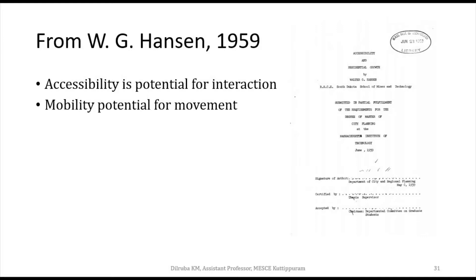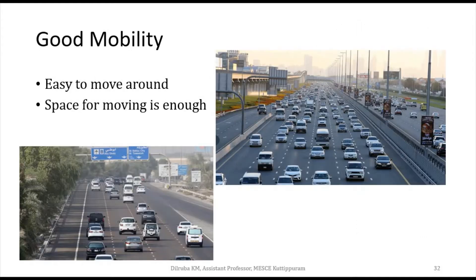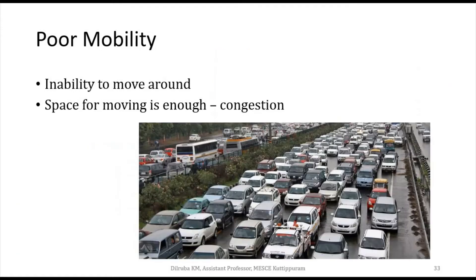Let's see what these really mean. Good mobility indicates that movement will be easy — there is enough space for moving vehicles on the road. Poor mobility is the inability to move around: we have space but it is over-occupied with vehicles and it is congested.